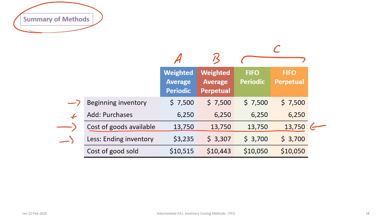What does change is ending inventory and cost of goods sold because of the costing approach taken. Notably, the FIFO periodic and FIFO perpetual approaches yield exactly the same ending inventory and cost of goods sold. So on an exam, unless you're specifically asked to show the perpetual approach, you can simply use the periodic approach and get the exact same answers.